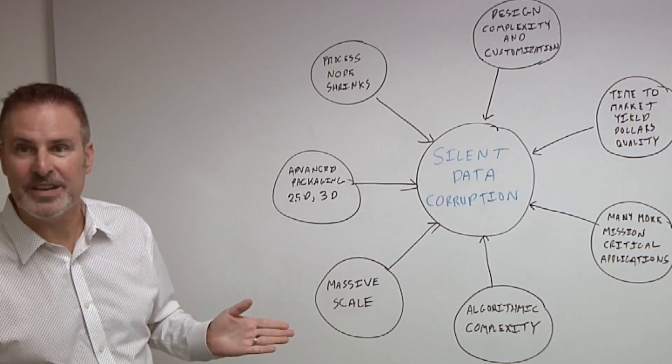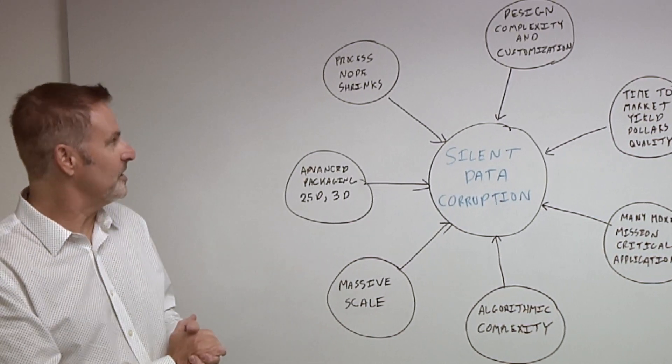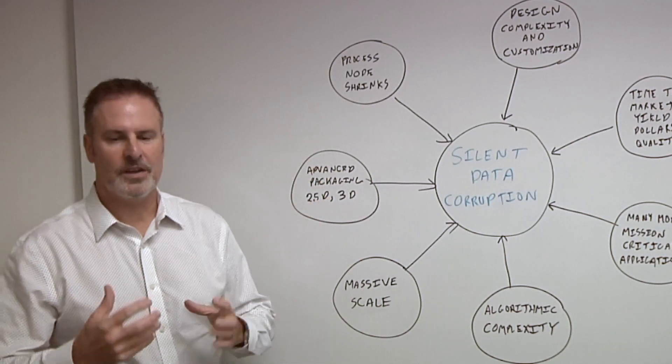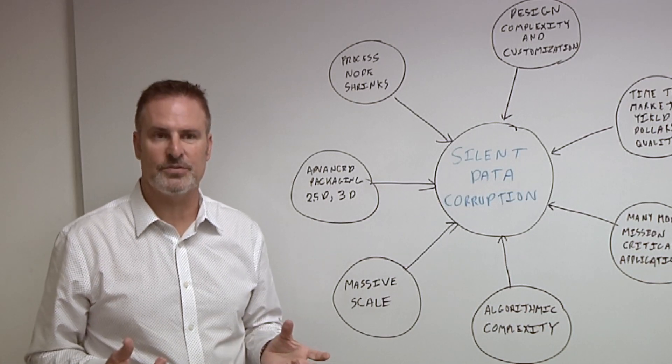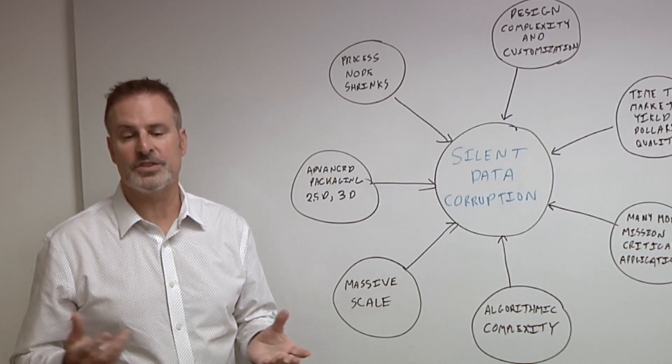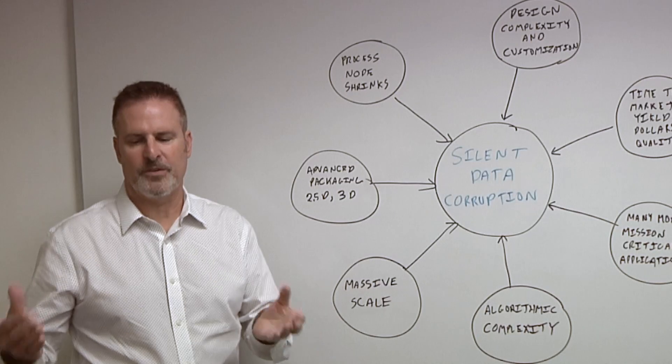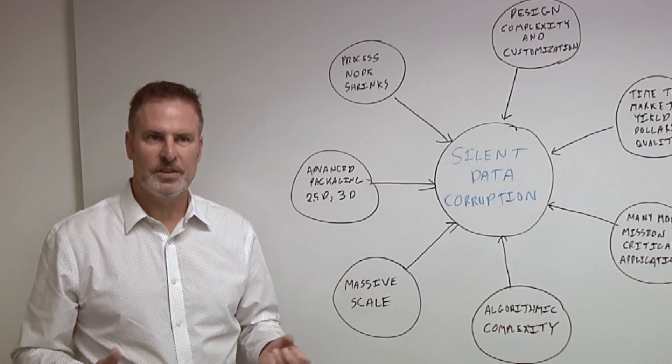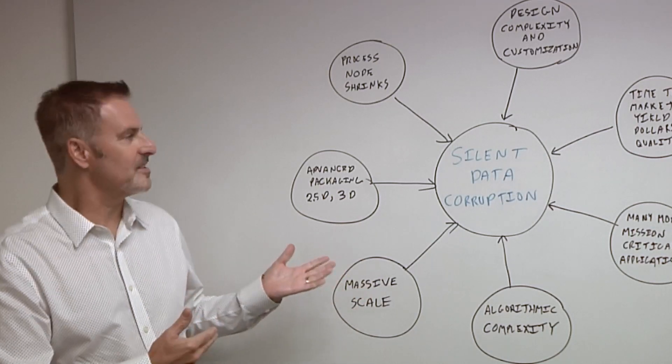As I thought about it, there are so many different aspects that contribute to silent data corruption, starting with the process node shrinks. We're now seeing effects at the physical level. As the process nodes shrink, there's new and different effects that are causing errors, error conditions that we didn't see before. But in a sense, it's no different from every time you go down in terms of the process nodes, you are seeing new and different errors and you have to account for those. But it's not just that in this case.